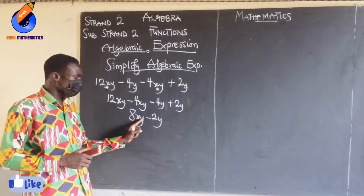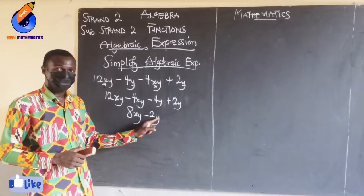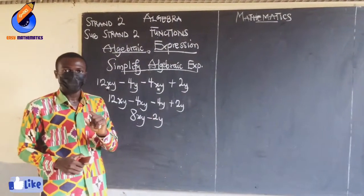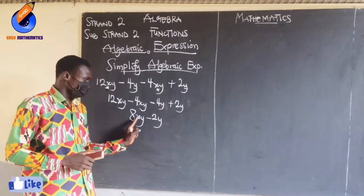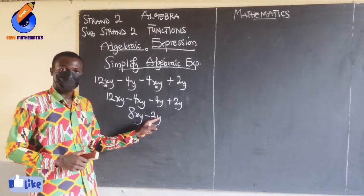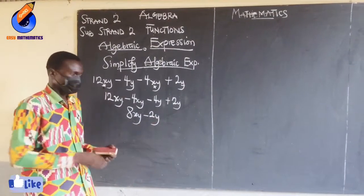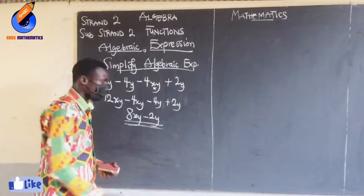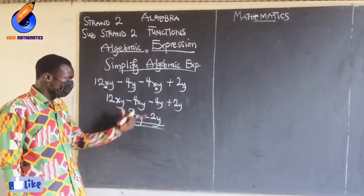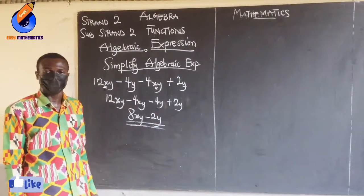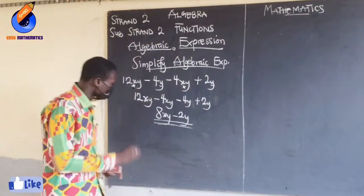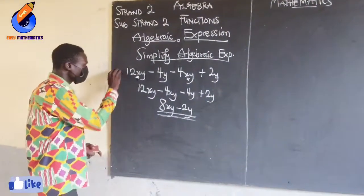When you look at xy and y, they are not the same because the variable here is xy but there is no x in the other term. So I leave my final answer as 8xy minus 2y. And that is how you do the simplification of algebraic expressions. Let's look at example 2.